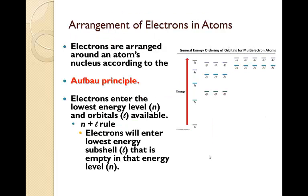Electrons are arranged around the atom's nucleus according to the Aufbau principle. Electrons enter the lowest energy level first, so the lowest n first, and the orbitals that are available. This is called the n plus ℓ rule.